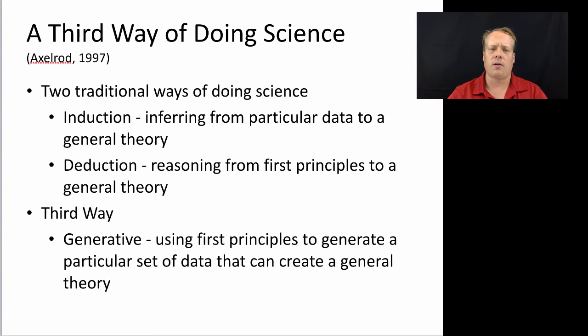Another way to think of agent-based modeling or of computer simulation in general is as a third way of doing science. And this is a phrase that was first mentioned by Bob Axelrod in 1997.